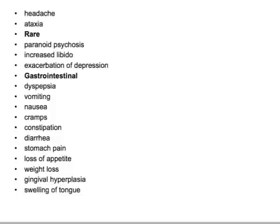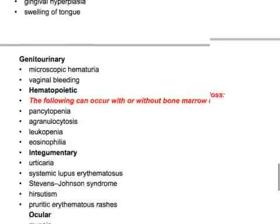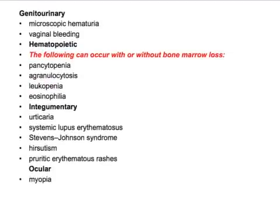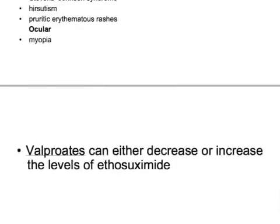Gingival hyperplasia is an important adverse effect to remember with ethosuximide. If a question mentions gingival hyperplasia and phenytoin is not listed as an option, look for ethosuximide. Other adverse effects include swelling of the tongue, and genitourinary effects such as microscopic hematuria and vaginal bleeding. Hematopoietic effects include pancytopenia, agranulocytosis, leukopenia, and eosinophilia.